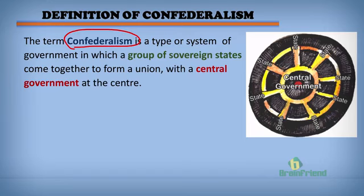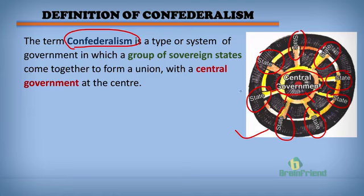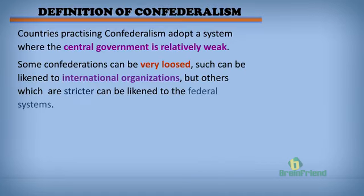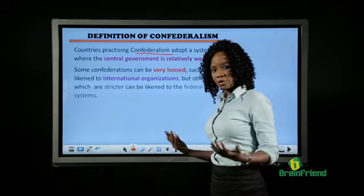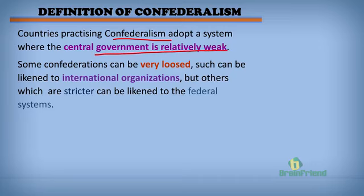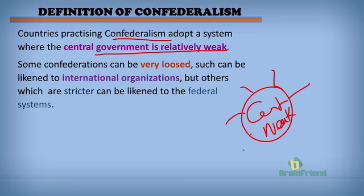What is confederalism? The term confederalism shows a type of system of government where different groups of sovereign states come together to form a union, with a central government at the center. Countries have practiced this form of government, but in doing so they have given room for their central government to be weak, because in confederalism the central government is very weak — powers are given to the different states.